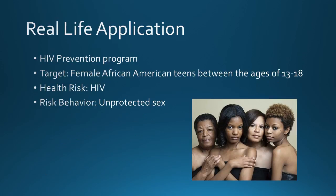I'm going to apply these six constructs to a theoretical HIV prevention program. The target of this program is female African-American teens between the ages of 13 and 18. The health risk behavior is HIV and the risky behavior is unprotected sex.